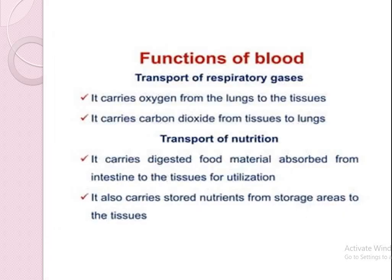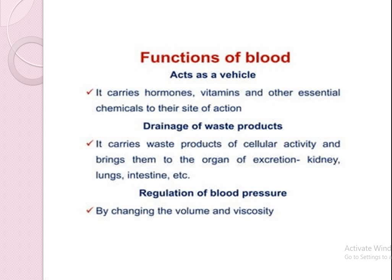Functions of blood. Blood carries oxygen from the lungs to the tissues and carries carbon dioxide from the tissues to the lungs. It transports food materials absorbed from the intestine to the tissues for utilization and also carries stored nutrients from storage areas to the tissues. It acts as a carrier of hormones, vitamins, and other essential chemicals to their sites of action. It carries waste products of cellular activity to the organs of excretion through the kidney, lungs, and intestine. It also helps regulate blood pressure.